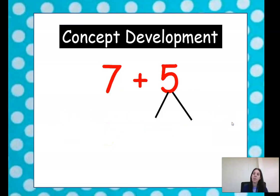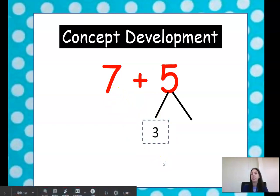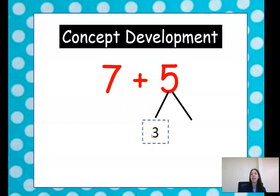Look at this one. 7 plus 5. So how many will we have to put here? 7. How many more to get to 10? 3 more. So 7 plus 3 equals 10. And then how many more? What's going to go here on our other side? 3 plus 2 equals 5.